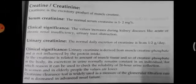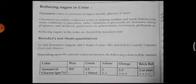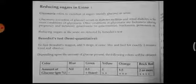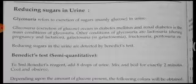This concludes the discussion on non-protein nitrogenous substances. Next, we discuss urinary tests related to reducing sugars. In carbohydrates there are two types: reducing sugars, which have free aldehyde or keto groups and react with Benedict's reagent producing a color change, and non-reducing sugars, which do not react with Benedict's reagent.